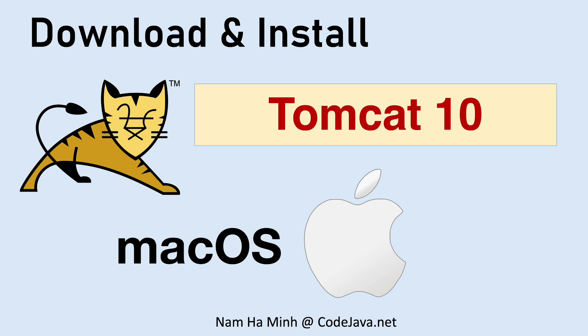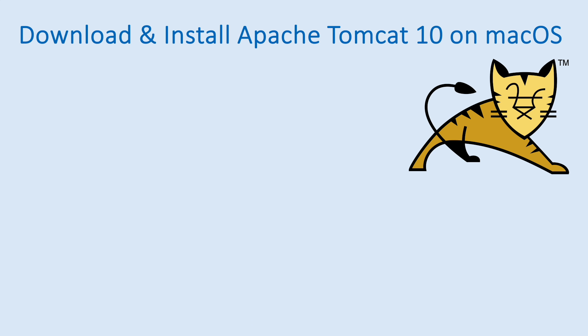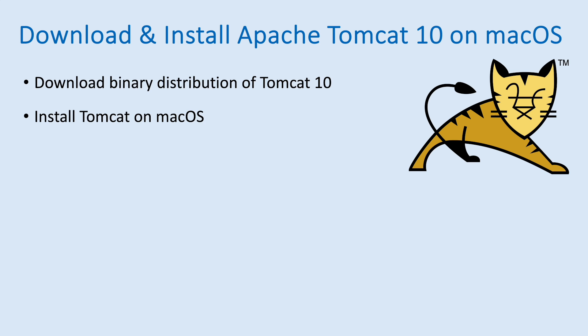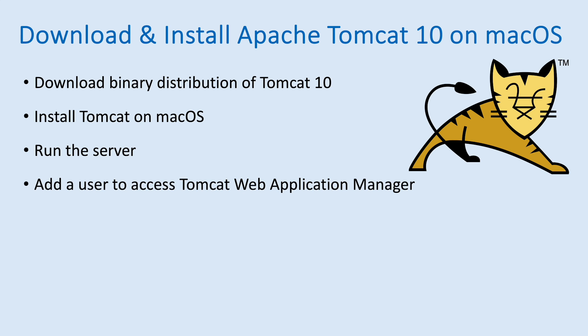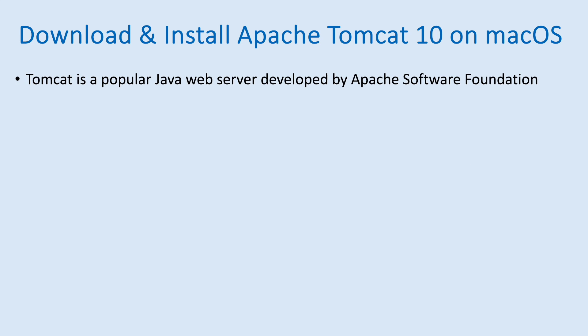Hello, welcome to the video. I'm Nam Ha Minh at CodeJava.net. In this video I'd like to share with you the steps to download, install, and run Apache Tomcat server version 10 on macOS. In detail, I'm going to show you how to download the binary distribution of Tomcat 10, install it on macOS, run the server, add a user to access the Tomcat web application manager, and how to stop the server. Tomcat is the popular Java web server developed by the Apache Software Foundation.